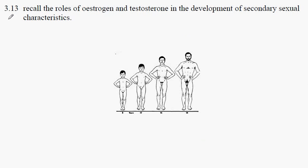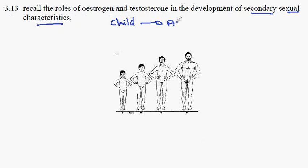IGCSE Biology, Syllabus Statement 3.13. Here we're looking at the role of oestrogen and testosterone in the development of what are called secondary sexual characteristics. Overall, what we see here is the transition from what might be called the child state to the adult state, a process which is known as puberty.